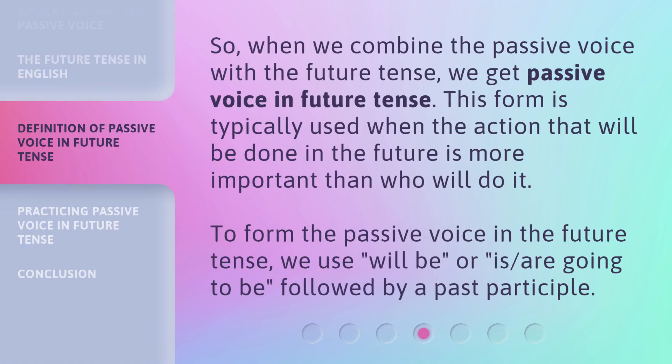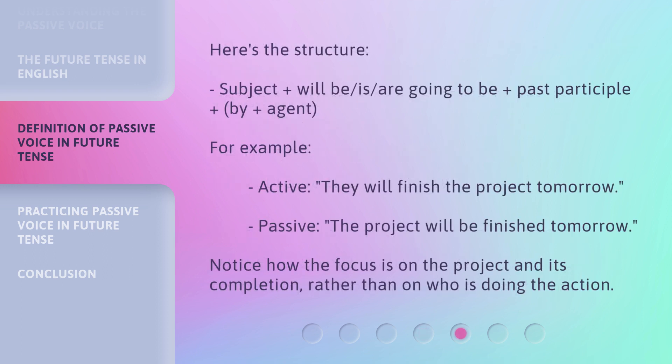So, when we combine the passive voice with the future tense, we get the passive voice in the future tense. This form is typically used when the action that will be done in the future is more important than who will do it. To form the passive voice in the future tense, we use 'will be' or 'is/are going to be', followed by a past participle. For example, active: they will finish the project tomorrow. Passive: the project will be finished tomorrow. Notice how the focus is on the project and its completion, rather than on who is doing the action.